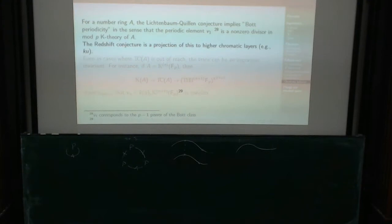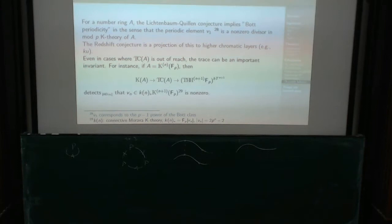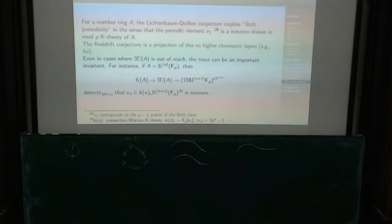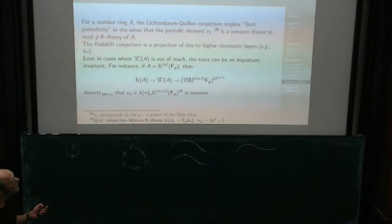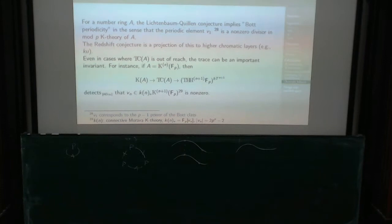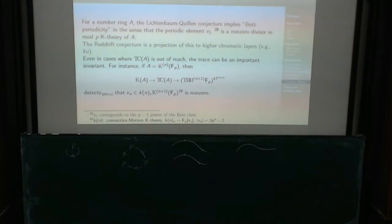Here is an example: you take the field with P elements, you take the K-theory of that — which gives a ring spectrum — and you take the K-theory of that, and of that, n times. Ideally, the first time you take K-theory: in K₀ it's the integers. What happened is that you went from P being zero to P acting injectively — it's a non-zero divisor at least at K₀. If I P-complete, I just have the P-adics in degree zero. Next time around, the Lichtenbaum–Quillen conjecture tells me that V₁ is going to be a non-zero divisor. And you keep going like that.